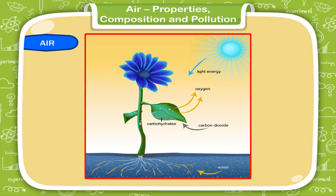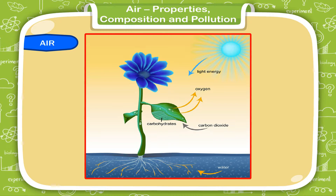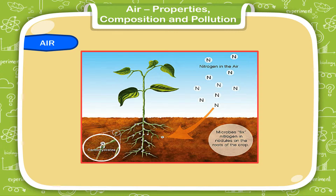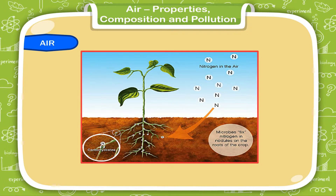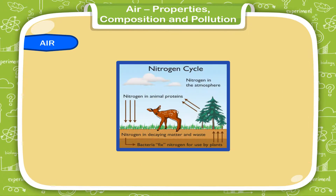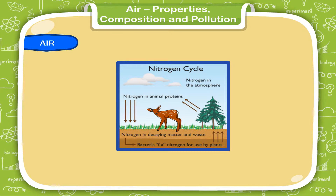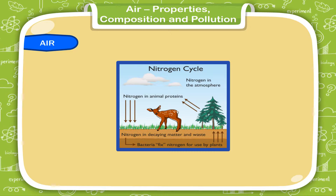Living things cannot directly use the nitrogen present in the air. Plants absorb nitrogen brought by certain bacteria in the soil. And when animals and humans eat plants or plant-eating animals, they get the required nitrogen.